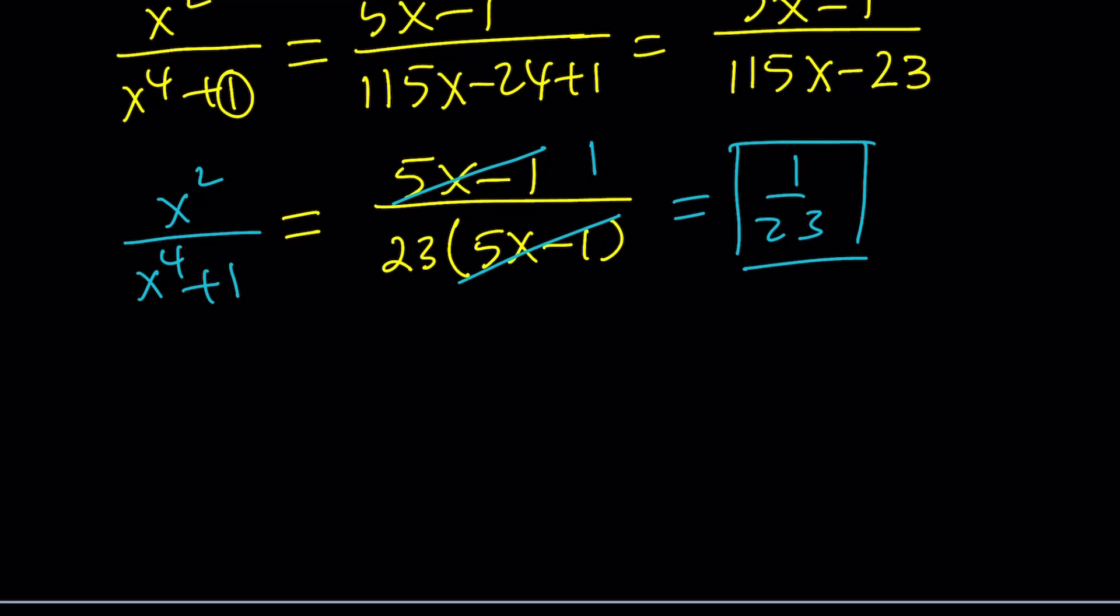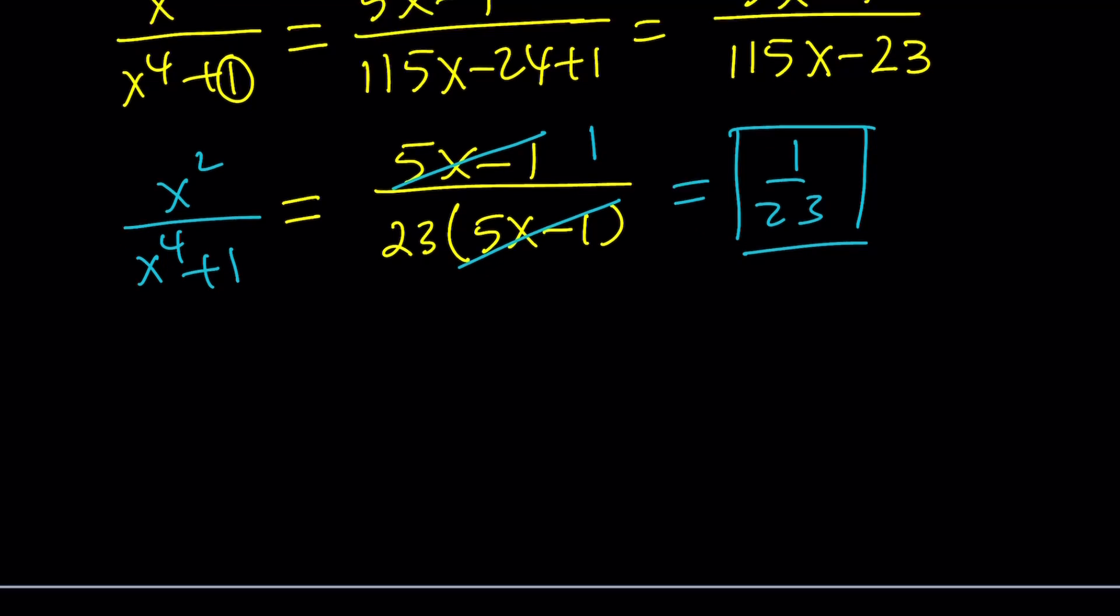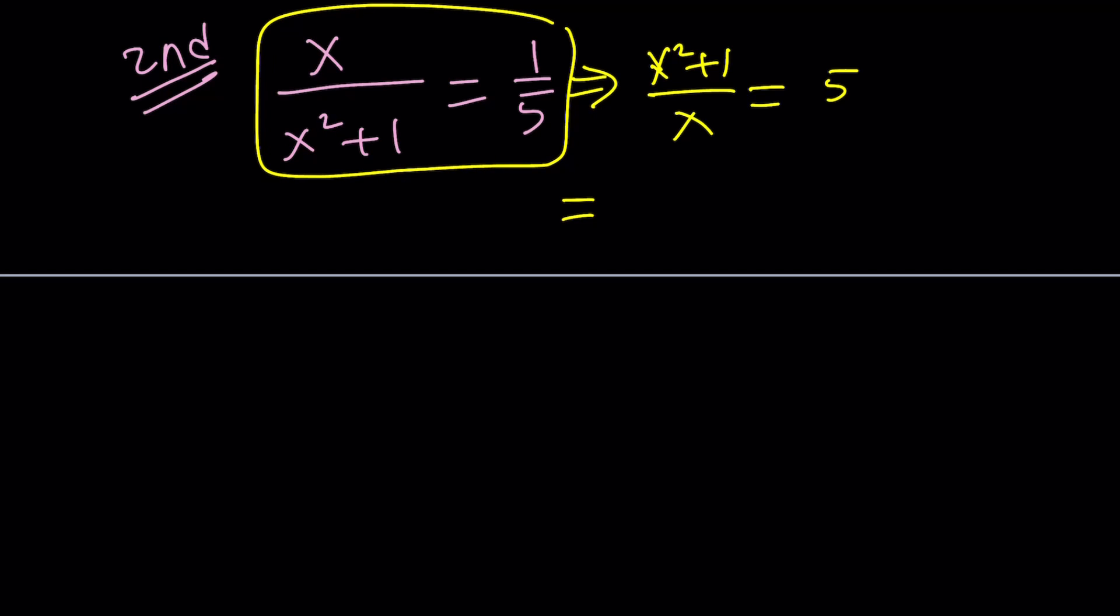Now let's take a look at the second method and see what happens. So we're given that x over x squared plus 1 is equal to 1 over 5. So what I'm going to do is, given the situation with the second and fourth powers, I'm going to flip this. And that's going to give me x squared plus 1 over x equals 5. And then we can separate this. And obviously the motivation behind that is when we flip both sides, it's going to be separable. We can write this as x plus 1 over x equals 5.